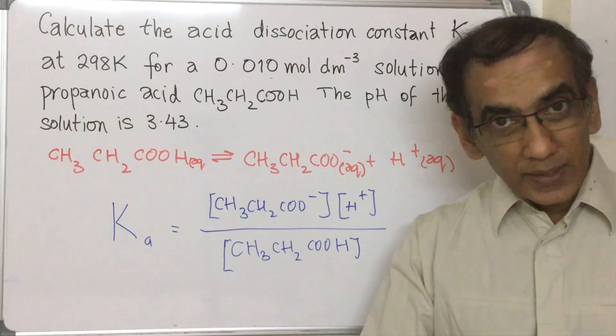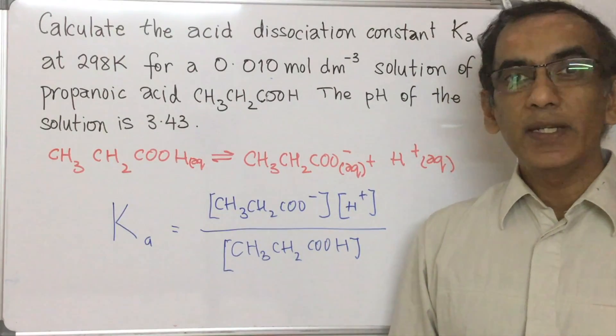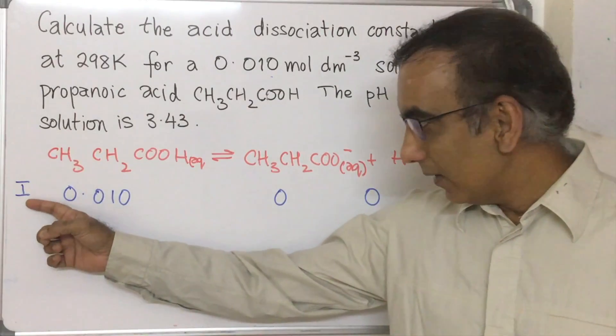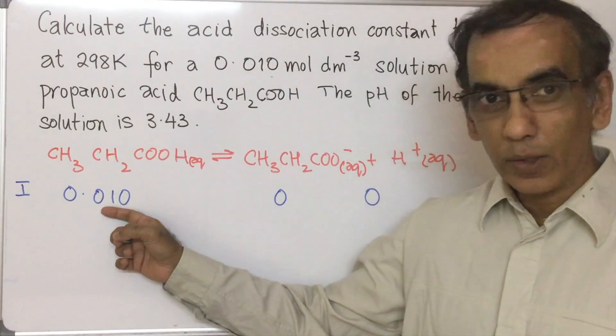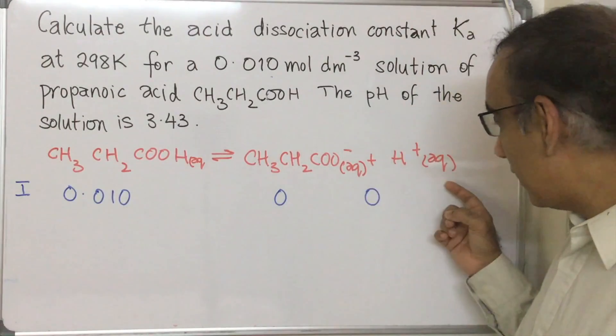To help organize all of the data in the calculation, you might recall that we spoke about using the ICE method. So the first part of that calculation would say I, the initial, with this concentration for propanoic acid and zero for these two ions.